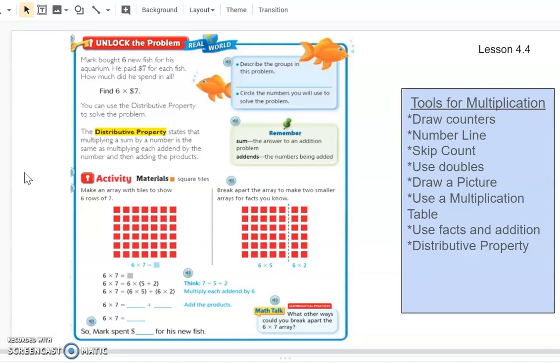So that sounds really complicated, but hopefully today I can help you make it easier for you. So as you can see, I added this to our tools for multiplication. So this is one strategy again that you may use and you may feel comfortable using. So the first thing we're going to do is we're going to make an array with the tiles, and this is going to show you how you could do the distributive property.